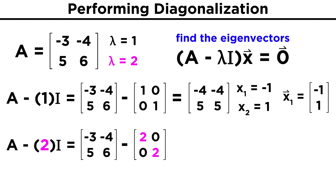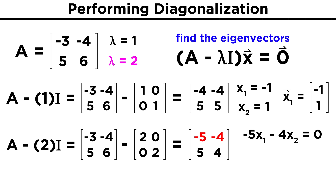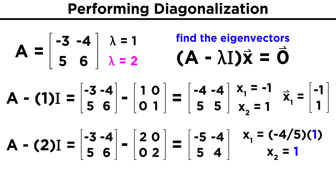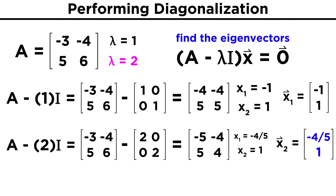Now we will plug in lambda equals two. Our matrix A minus lambda I becomes negative five, negative four, five, four. Both rows will again give the same result, but looking at the top row, we get negative five X1 minus four X2 equals zero. Solving for X1, we get X1 equals negative four fifths X2. Choosing X2 equals one, we get X1 equals negative four fifths, making our eigenvector for lambda equals two equal to negative four fifths, one.